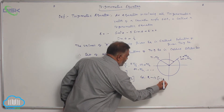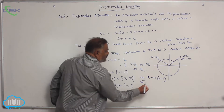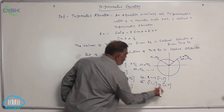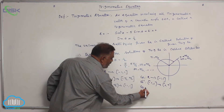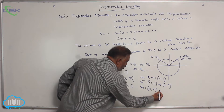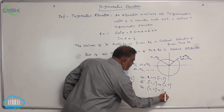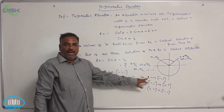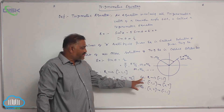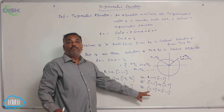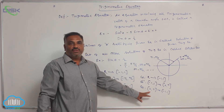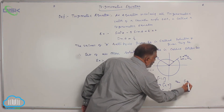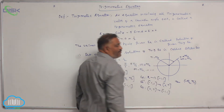Cosine is also a function from R to minus 1 to 1, whereas cosine inverse is from minus 1 to 1 to 0 to pi. Observe clearly that R is the domain of the cosine function, whereas 0 to pi is the bijective domain of the cosine function.